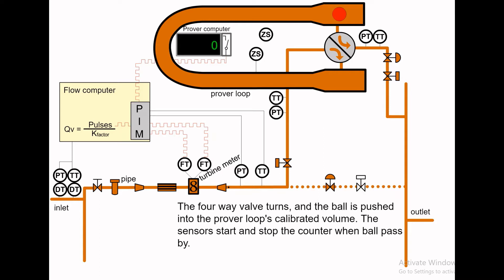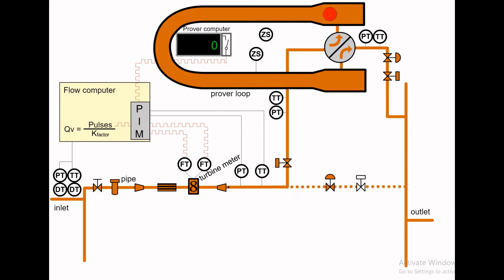The four-way valve turns and the ball is pushed into the prover loop's calibrated volume. The sensors start and stop the counter when the ball passes by.